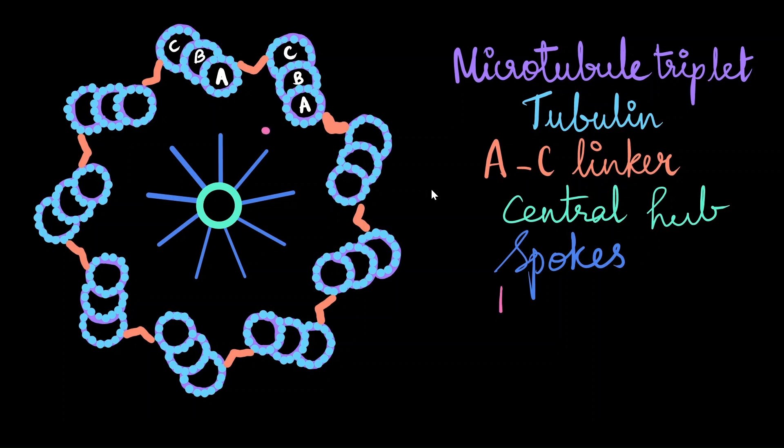At the end of the spokes, you see a structure called the pinhead. It is the meeting spot between the triplet and the spokes.